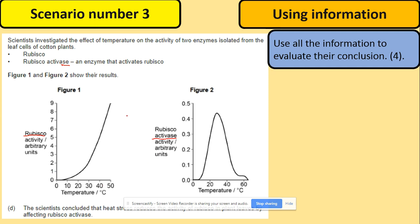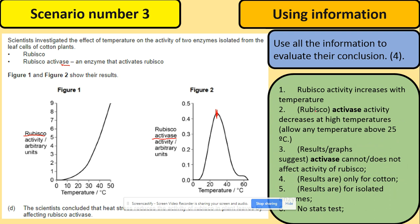This is all about rubisco and this is rubisco activase. Rubisco increases with temperature, but rubisco activase increases up to this point and then decreases. So use the information which we just described to evaluate the conclusion. Rubisco activity increases with temperature. We can see that. Rubisco activase activity decreases at high temperatures above 25, which will be correct. We've seen that.